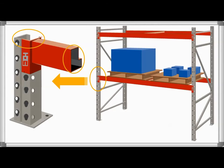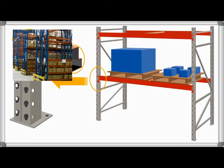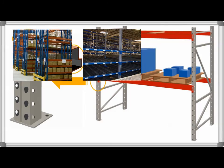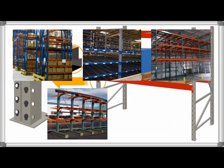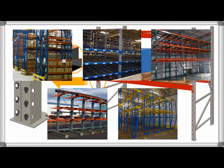Like structural, roll form rack can be designed as a selective system, a flow system, a pushback system, a cantilever system, and drive-in and drive-through systems.